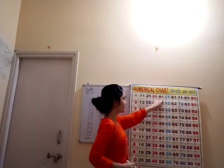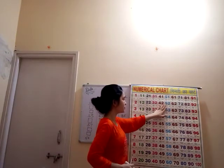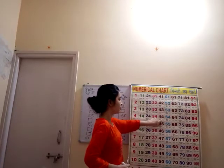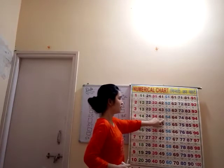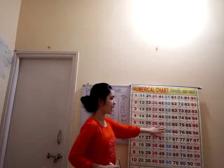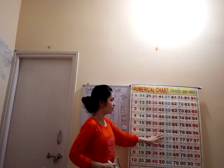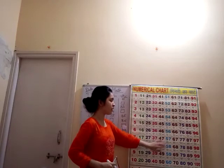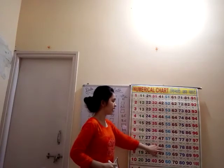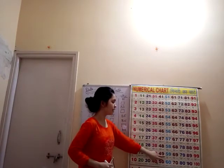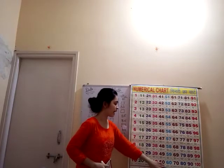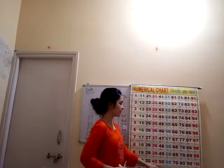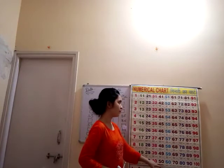4, 1, 41. 4, 2, 42. 4, 3, 43. 4, 4, 44. 4, 5, 45. 4, 6, 46. 4, 7, 47. 4, 8, 48. 4, 9, 49. 5, 0, 50. 49 ke bad kya atar? 5, 0, 50.